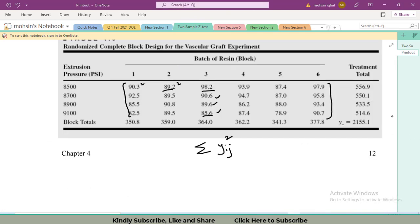Let's go towards the data so that it will be more clear to us. Here we have y i dot. These are 556.9, 550.1, 533.5, and likewise. These are the 4 y i dot values. What I will have to do? As per the formula, I will use these 4 values.